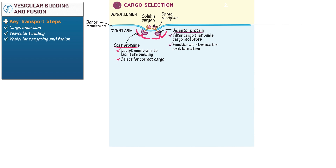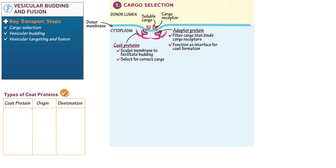Specific coat proteins refer to specific vesicular transport pathways within the cell. Let's introduce these different coat proteins. Start a chart to learn the different kinds of coat proteins, their membranes of origin, and the destinations of the vesicles that they help shape. Indicate that clathrin proteins originate in the Golgi and are involved in vesicular transport to lysosomes. These clathrin proteins are specifically paired with adaptin-1 adapter proteins. Adapter proteins are often considered inner coat proteins.